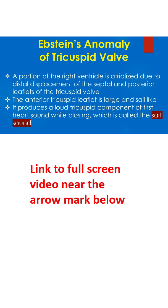The anterior tricuspid leaflet is large and sail-like. It produces a loud tricuspid component of the first heart sound while closing, which is called the sail sound.